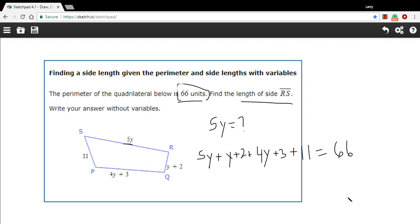Now, we need to do some simplifying and then try to solve for y. So let's see, we can combine like terms here. We've got 5y, 1y, 4y. Altogether, that's 10y. And then we've got a 2 and a 3 and an 11. So that's 16.